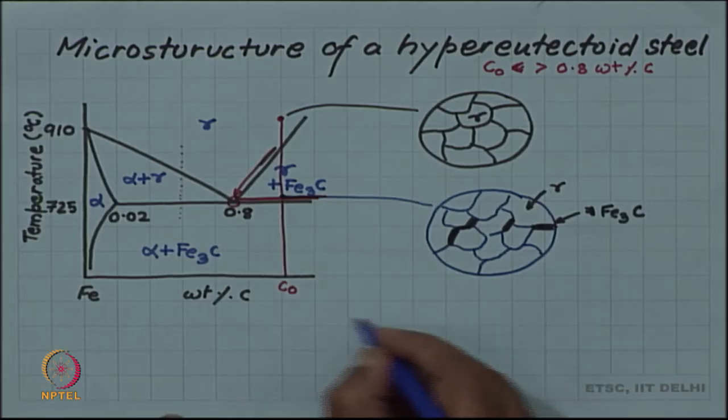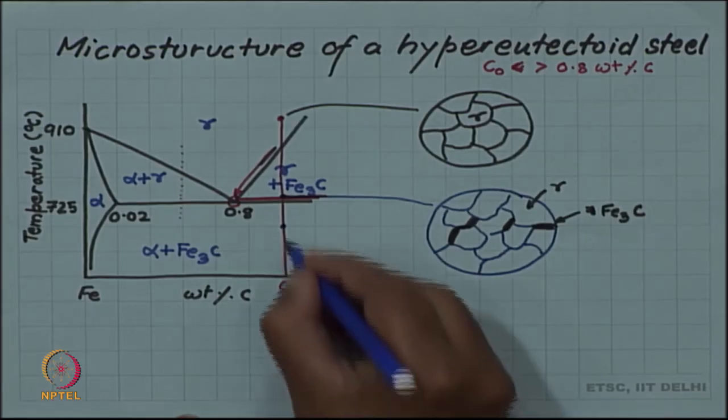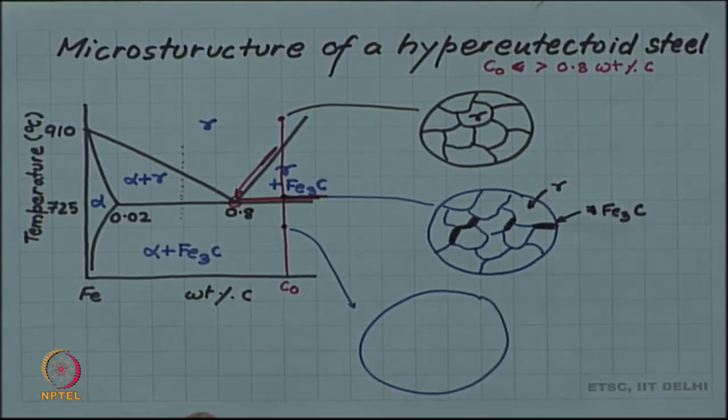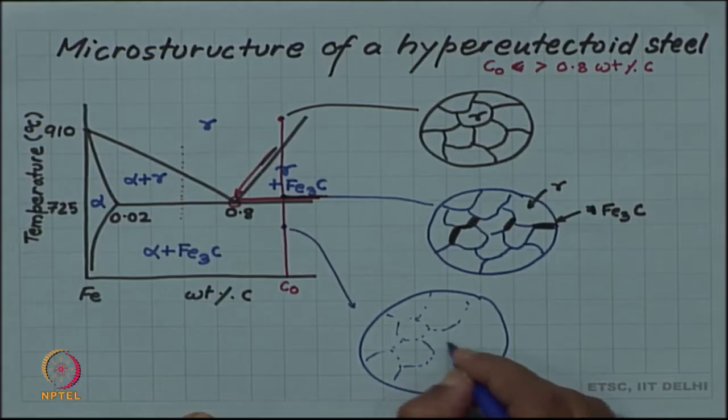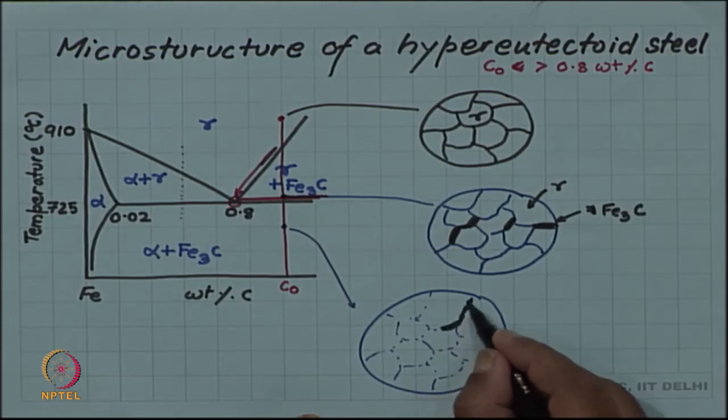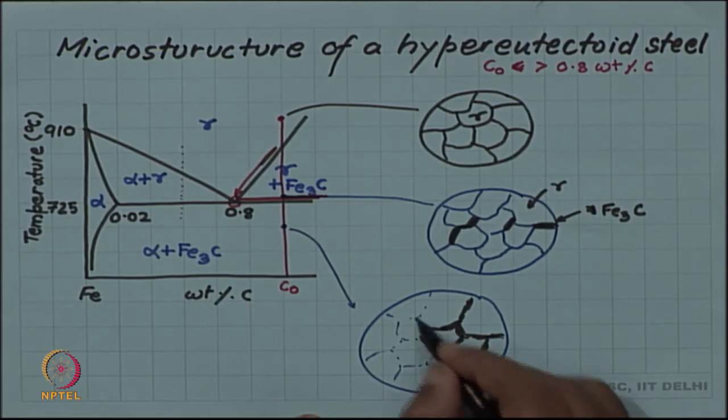It will transform as you know now. Below the eutectoid horizontal we try to draw the microstructure. You have these austenite boundaries. I am drawing it in dashed line because I want to cover these with the Fe3C. Fe3C has formed along these boundaries depending upon the amount of Fe3C which will also depend on the composition.